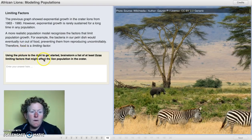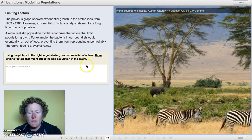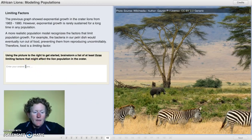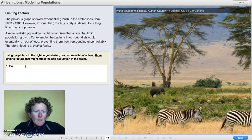Using the picture to the right to get started, brainstorm a list of at least three limiting factors that might affect the lion population in the crater. Well, the first thing I see here that we already talked about is food. Zebras are food for lions. That's number one. Food.